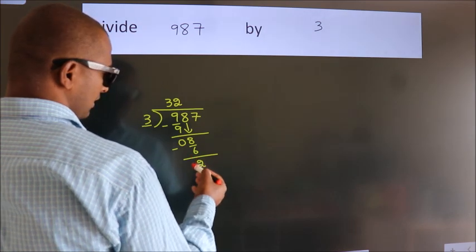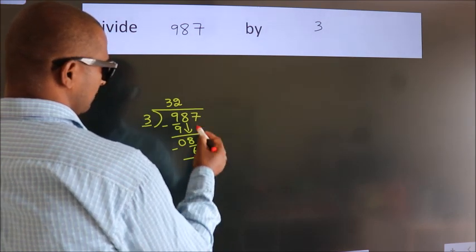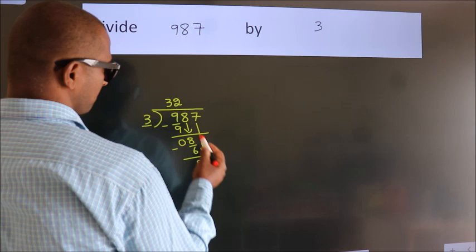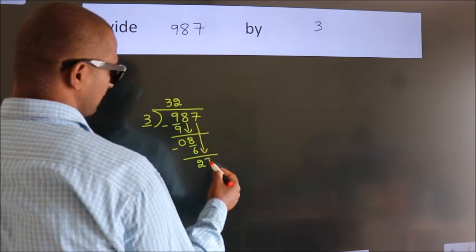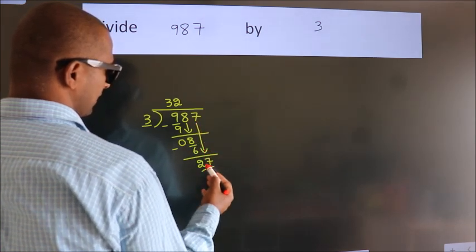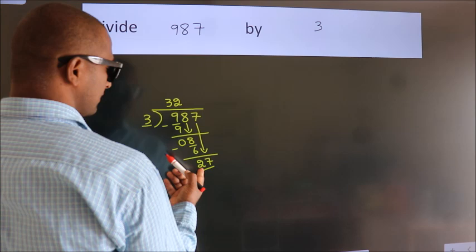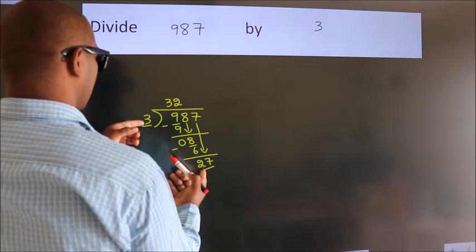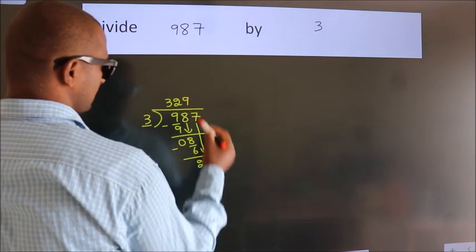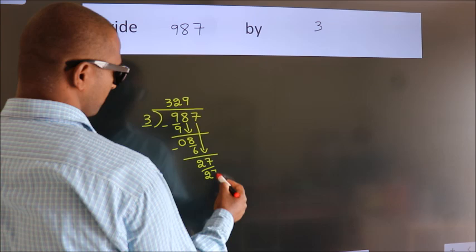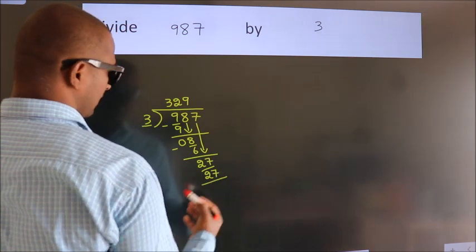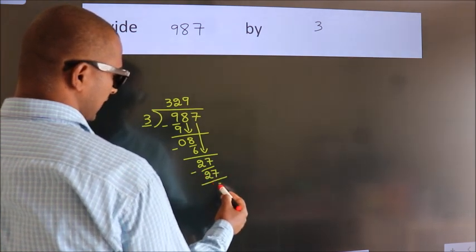We get 2. After this, bring down the beside number. So 7 down. So 27. When do we get 27? In 3 table. 3 nines, 27. Now we subtract. We get 0.